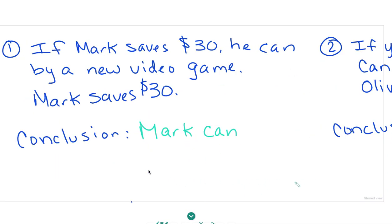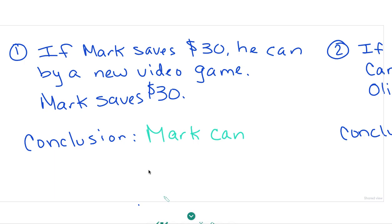All right, let's look at the first one. The first one says, if Mark saves $30, that's my P, he can buy a new video game. That's my Q.